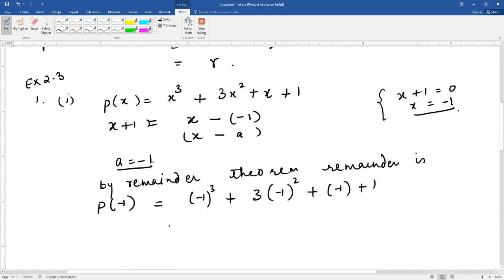p(-1) equals (-1)³ plus 3(-1)² plus (-1) plus 1, and you get the answer -1 plus 3 minus 1 plus 1. What do you get? 3 plus 1 gives 4, and -1 minus 1 is -2, so the answer is 2. So this is the remainder if p(x) is divided by x plus 1.